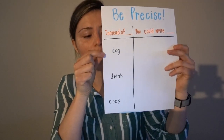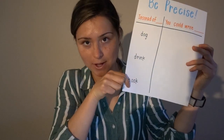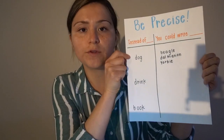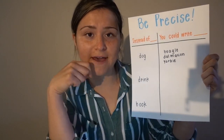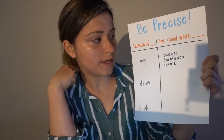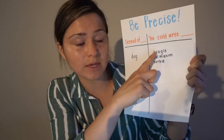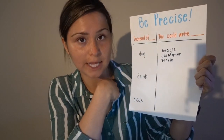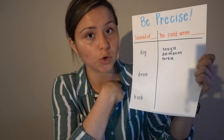So I have dog, drink, and book. For the noun dog in my story, I went back and found that noun I could be more precise with. Instead, I want to be specific. Maybe it was a beagle, like Gomer, or a Dalmatian, or a Yorkie.